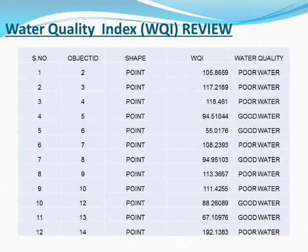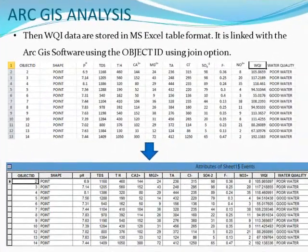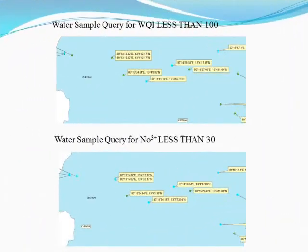The water quality index gives results as poor water in certain areas and good water in certain areas. Then the query can be performed using RJA and the spatial variation is performed. The data are inputted from the Excel sheet to the RJA software. This is the water sample query performed in RJA software.